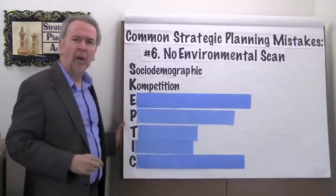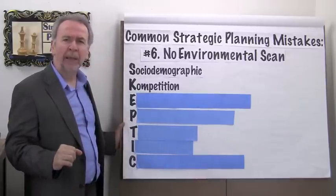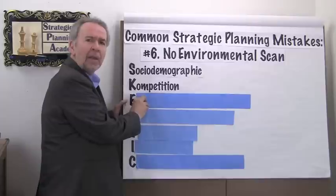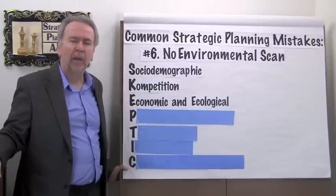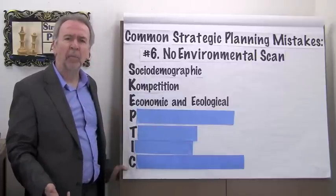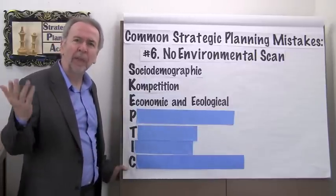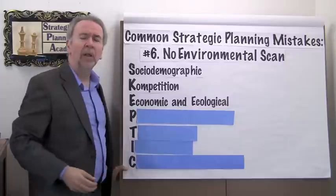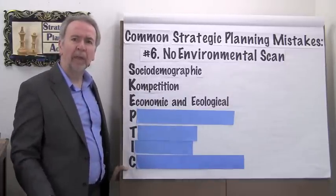So K stands for competition. What's happening with your competitors? What are they doing that can be issues for you? The E has a double meaning: economic and ecological. In terms of economics, what's the purchasing power of your target market? What are factors like interest rates? What are trends in the economy and how will those affect your business? The ecological stands for the going green movement and all the implications there.